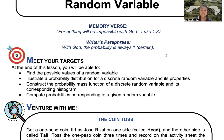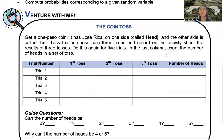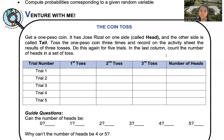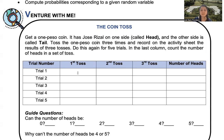You'll also be able to compute probabilities corresponding to a given random variable. Here's a sample venture activity — let's do a coin toss. Get a one-peso coin; one side is the head and the other is a tail. Toss the coin three times and record the results in the activity sheet. Do this again for five trials. In the last column, count the number of heads in each set of tosses. For example, if toss one is head, toss two is tail, and toss three is head, the number of heads is two.